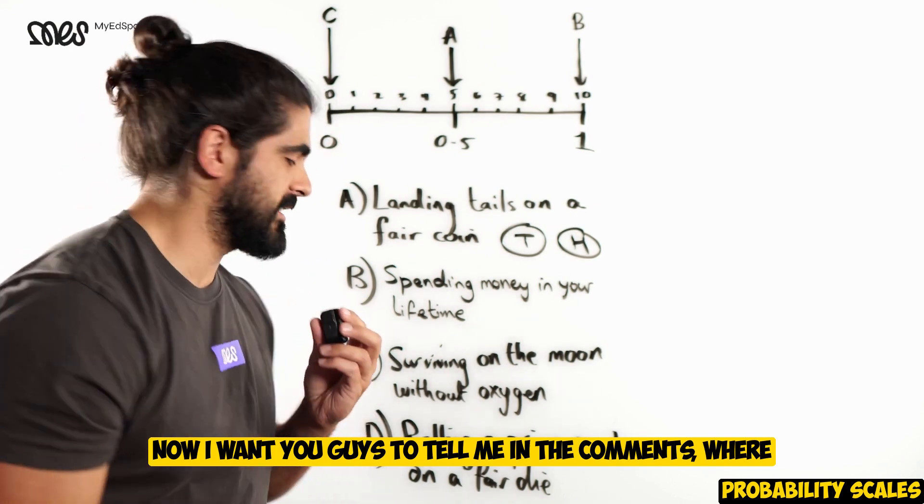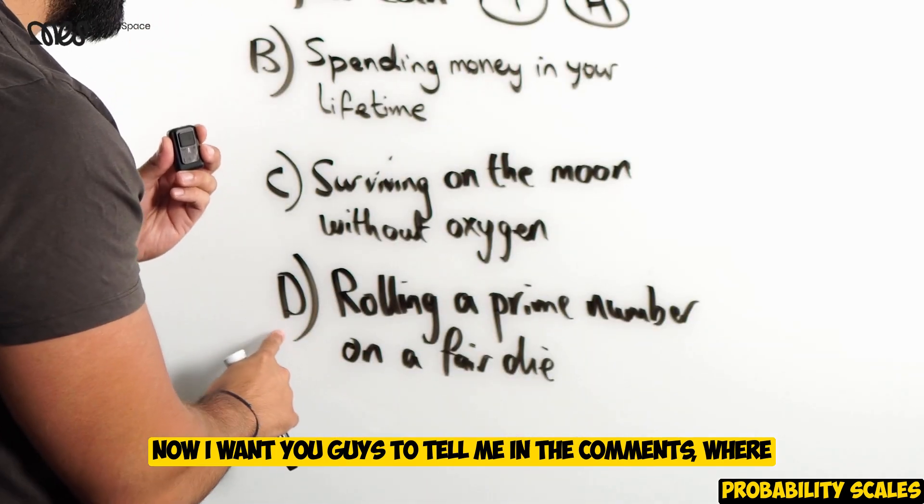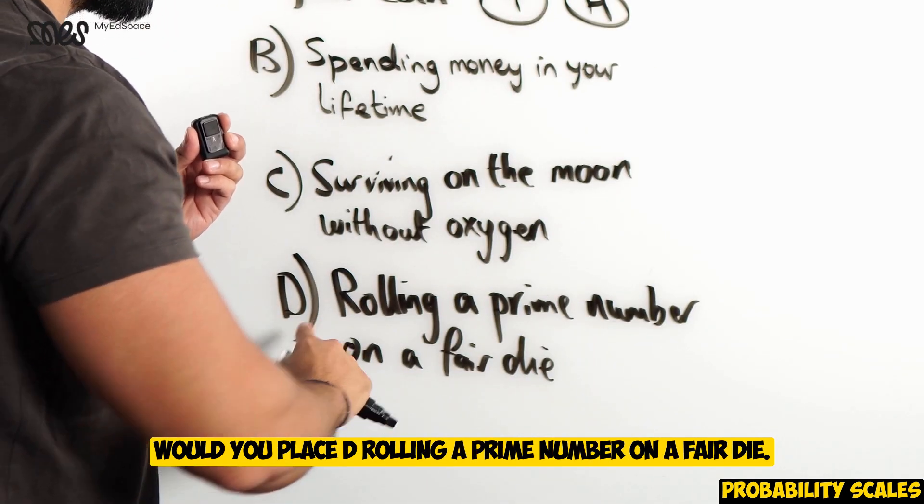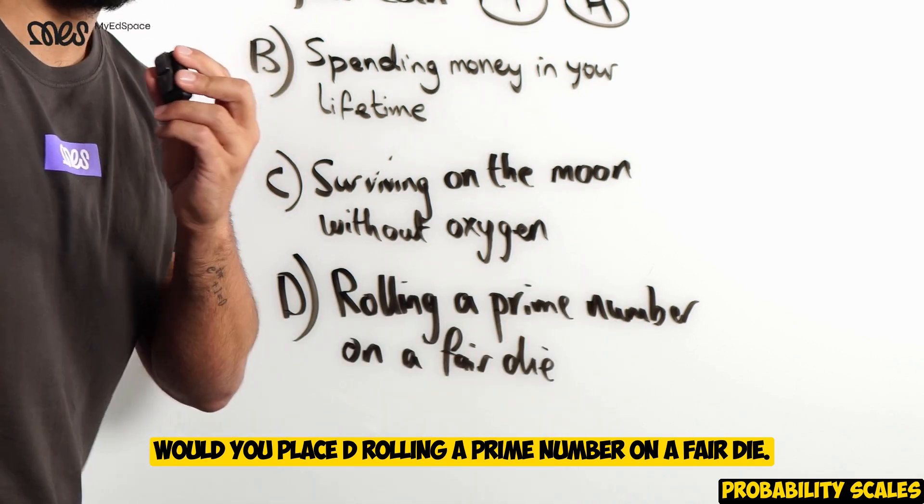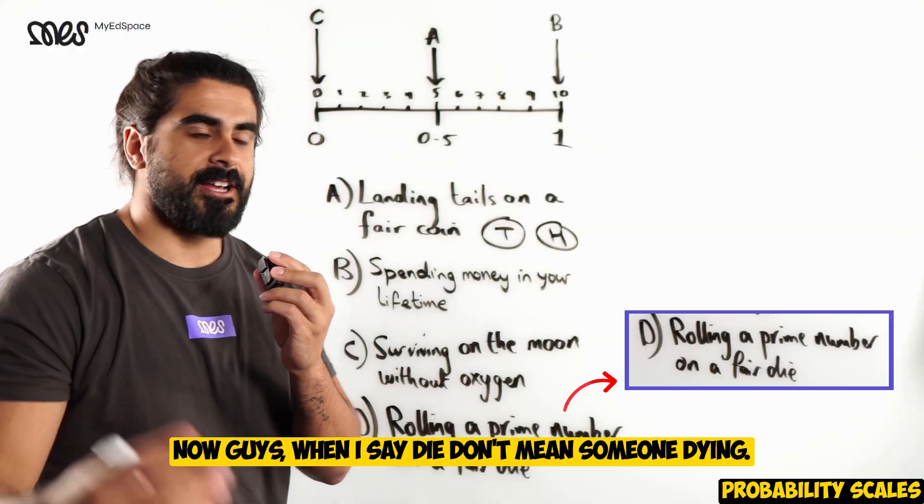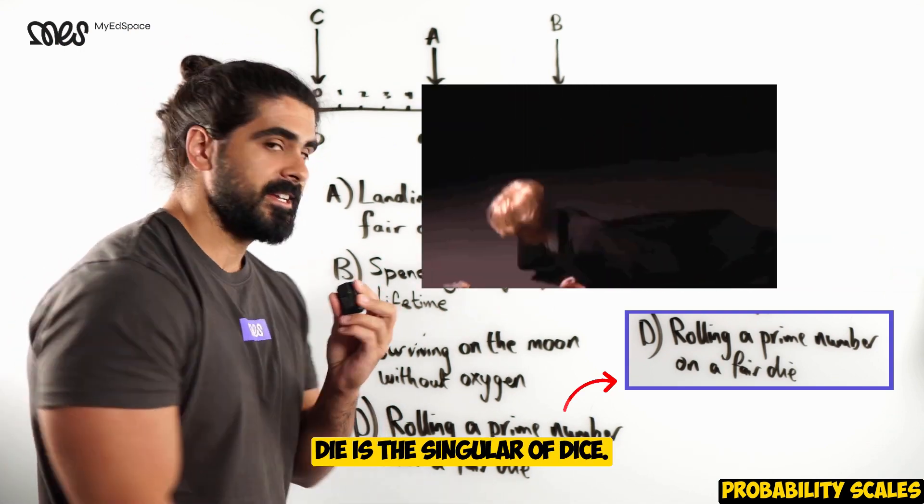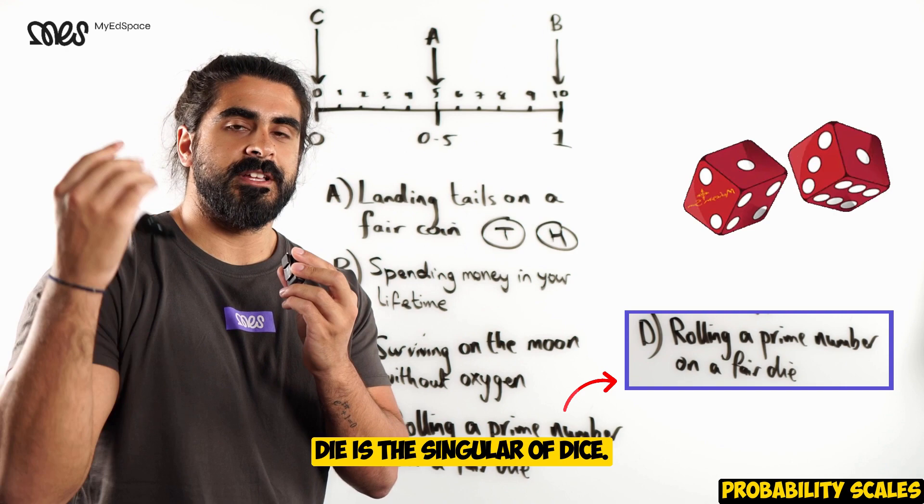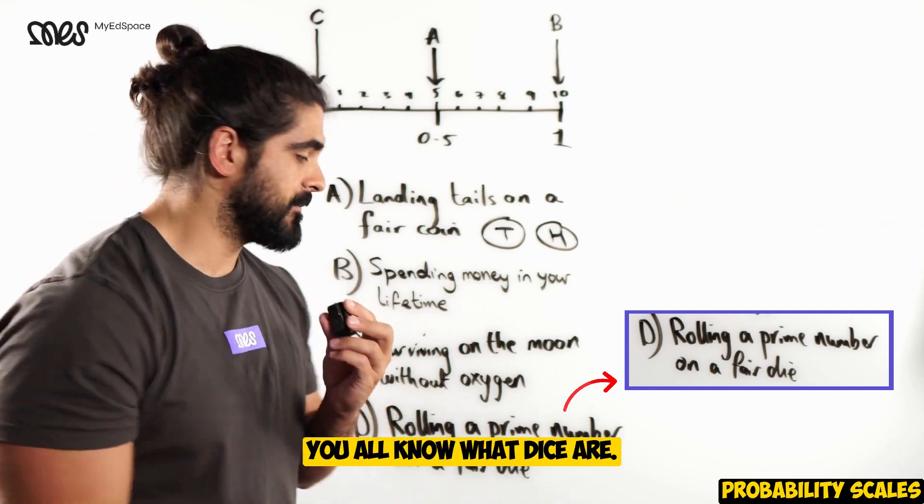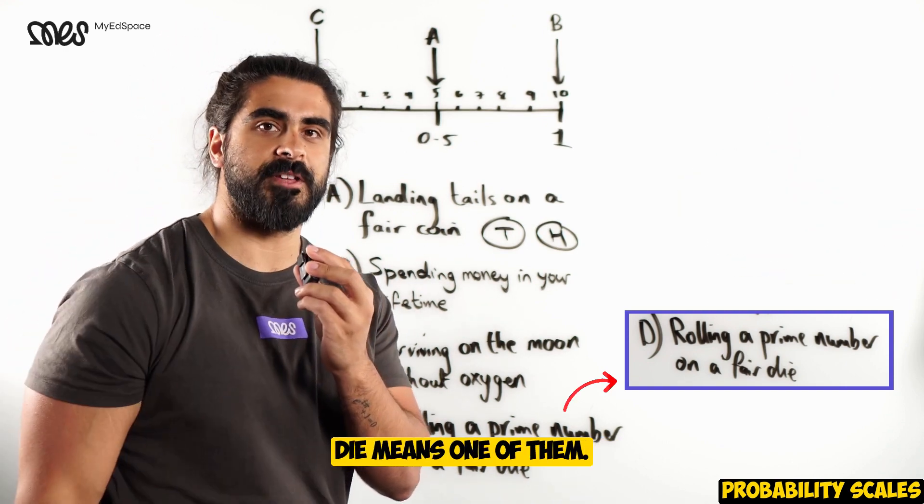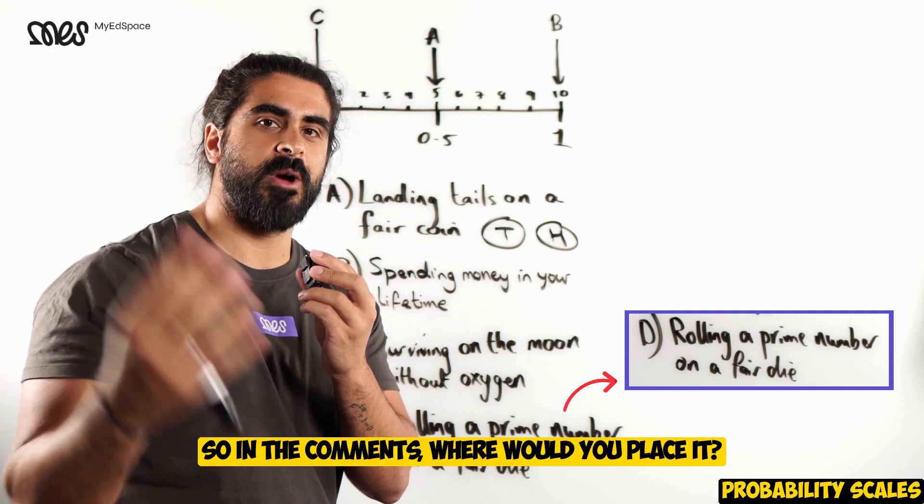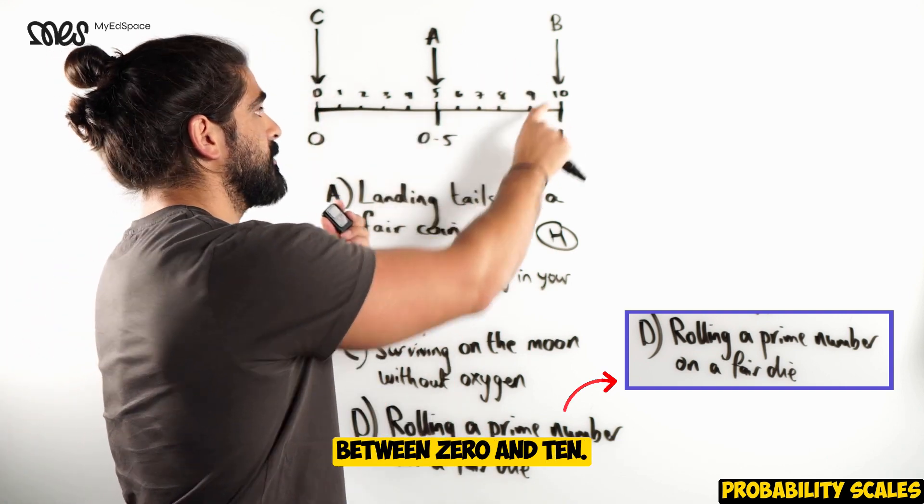Now, I want you guys to tell me in the comments, where would you place D? Rolling a prime number on a fair die. Now, guys, when I say die, I don't mean someone dying. Die is the singular of dice. You all know what dice are. Die means one of them. So, in the comments, where would you place it? Between 0 and 10.